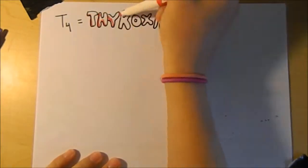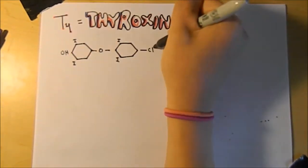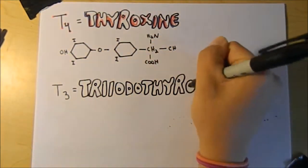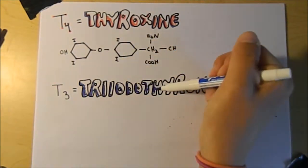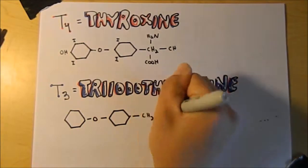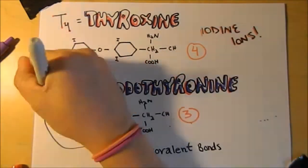T4 is known as thyroxine. This thyroid hormone contains four iodine ions. T3 is known as triiodothyronine. This thyroid hormone has only three iodine ions. Both T3 and T4 are held together by nonpolar covalent bonds.